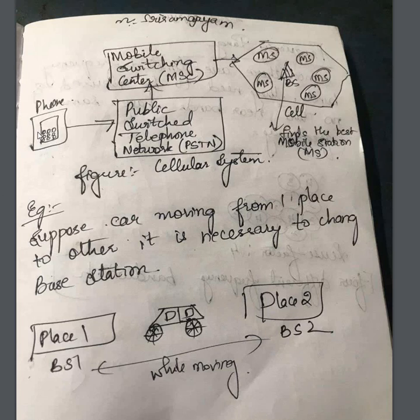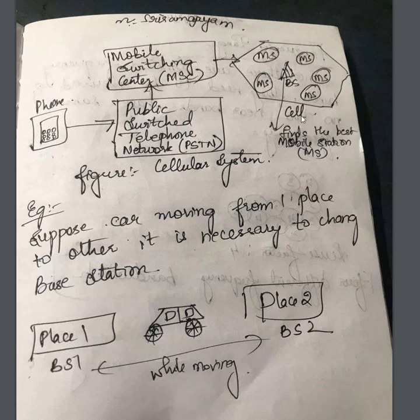To summarize: when a person calls, it goes to the Public Switched Telephone Network — you can remember it as something like a central authority — then to the Mobile Switching Center, then to the base station. The base station checks for the best mobile station (MS). The base station together with its mobile stations forms what we call a cell, which finds you the best mobile station.